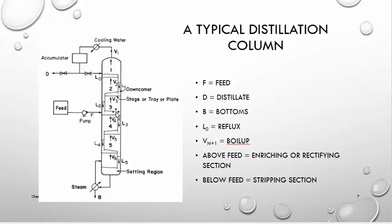The last thing is we're going to talk about the column as being in sort of two halves. Everything that's above the feed, we're going to call the enriching section or the rectifying section. Both terms are used. Everything that's below the feed, we call the stripping section. It's about the way that they function. It'll make a little bit more sense when we hit the sections on absorption and stripping.